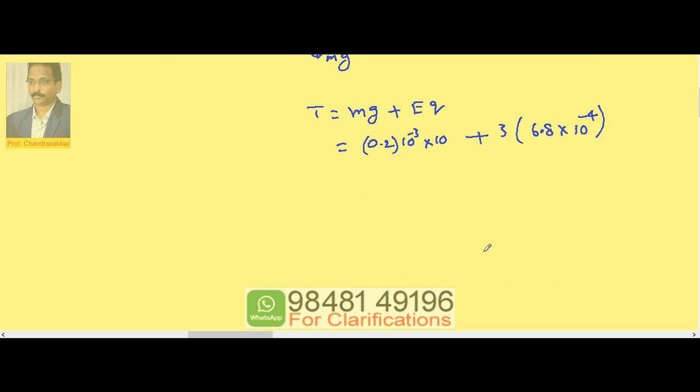So if I substitute, this becomes 2 × 10⁻³ plus this value, 20.4 × 10⁻⁴, or 2 × 10⁻³ plus 2.04 × 10⁻³.